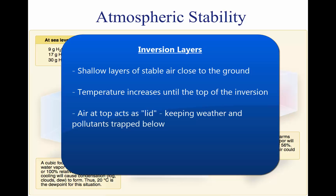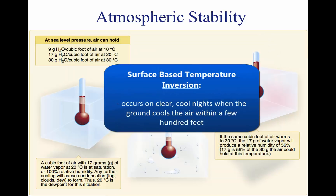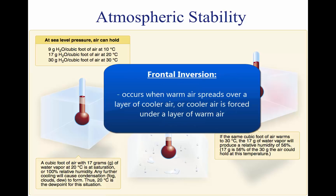The air at the top of the inversion layer acts as a lid, keeping weather and pollutants trapped below. If the relative humidity of the air is high, it can contribute to the formation of clouds, fog, haze, or smoke, resulting in diminished visibility in the inversion layer. Surface-based temperature inversions occur on clear, cool nights when the air close to the ground is cooled by the lowering temperature of the ground. Frontal inversions occur when warm air spreads over a layer of cooler air, or cooler air is forced under a layer of warmer air.